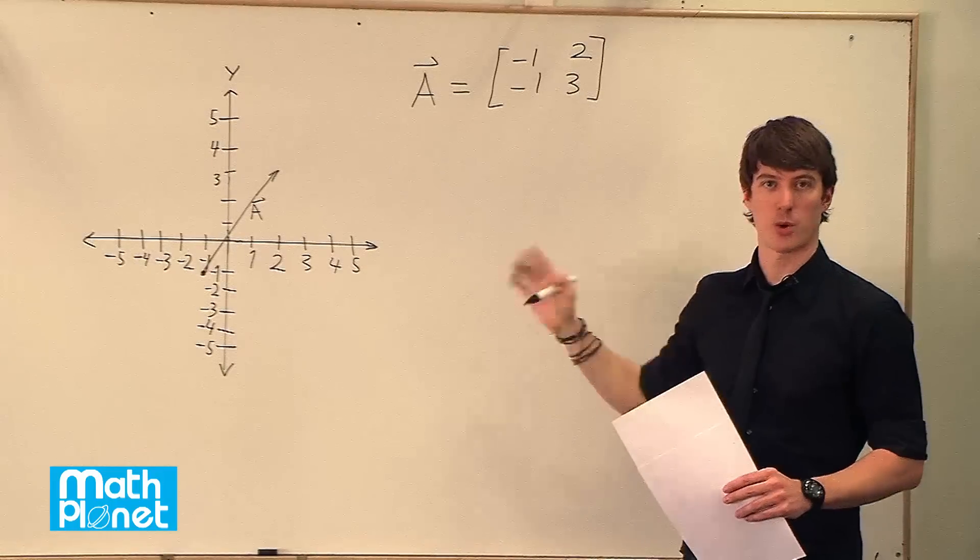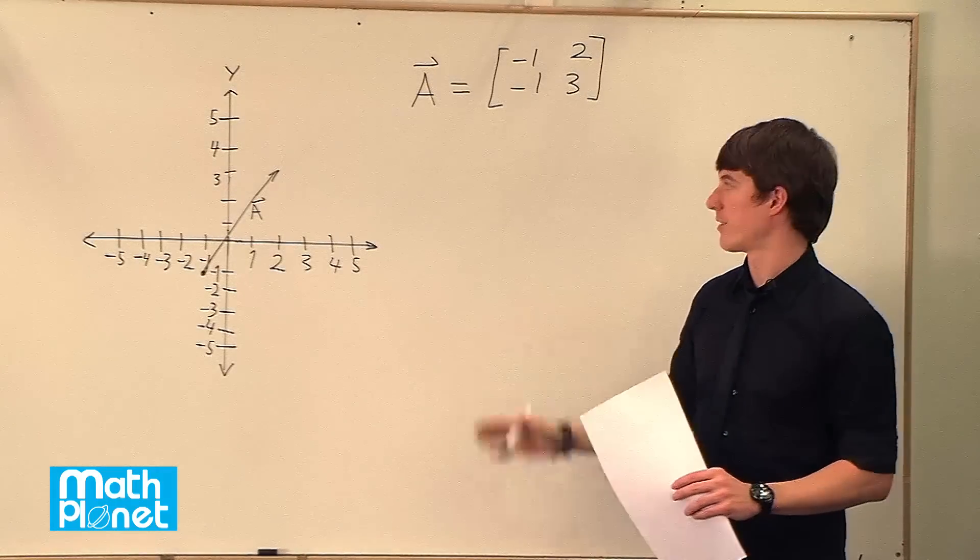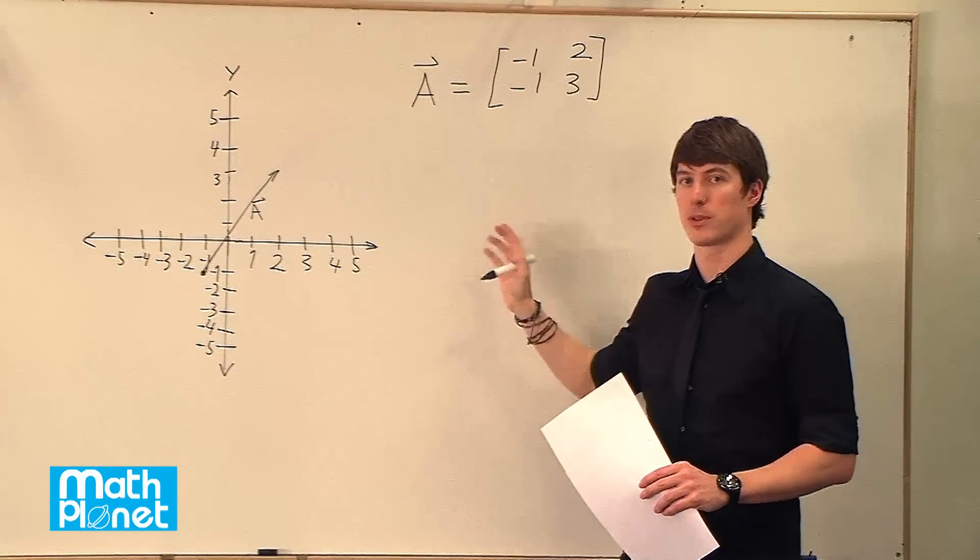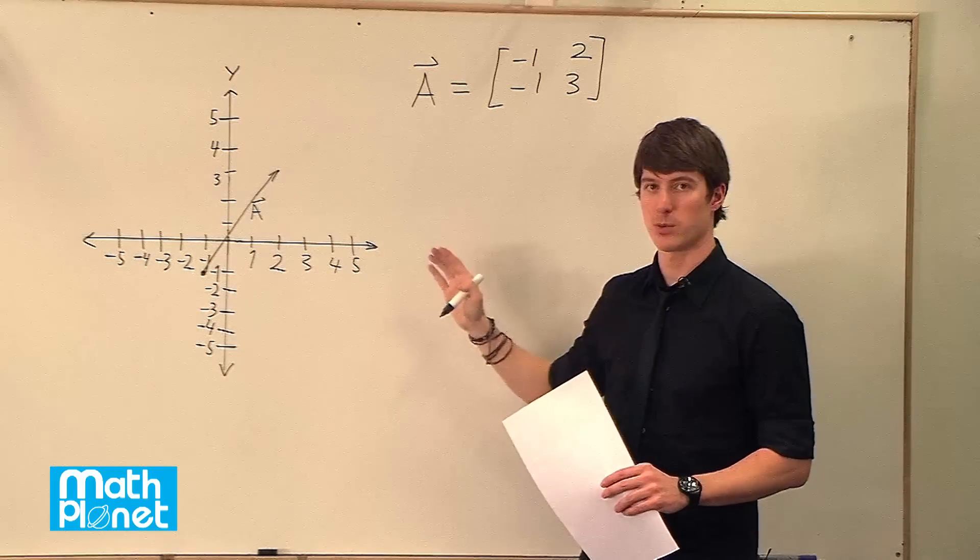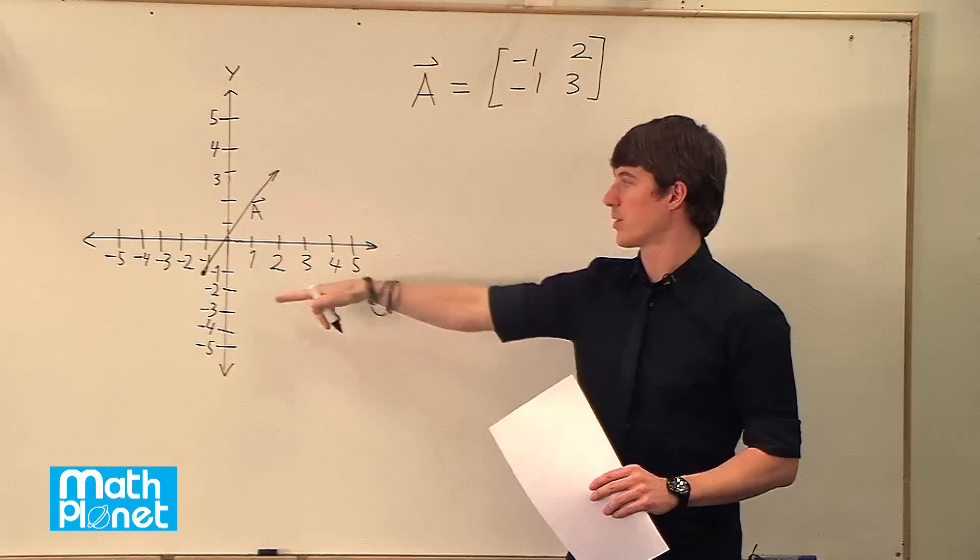What we want to do with A is rotate it by 90 degrees, and then find, using matrix form, this vector B, which is rotated 90 degrees from A, and then we're going to draw it.